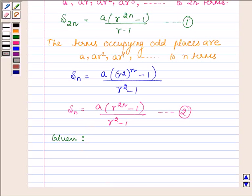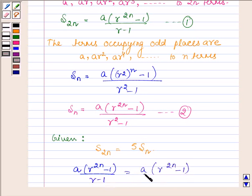Substituting, A(R^(2N) - 1)/(R - 1) = A(R^(2N) - 1)/(R² - 1) × 5.